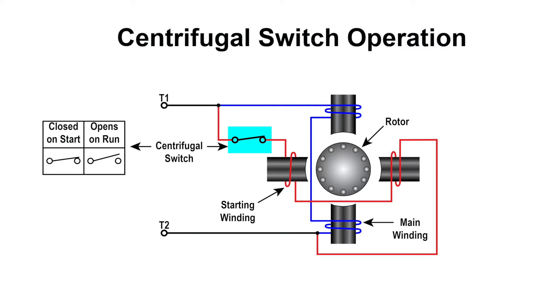In the example provided, when the motor approaches its normal operating speed, the centrifugal force overcomes the spring force, allowing the contacts to open and disconnect the starting winding from the power source. The motor will then continue running through the run windings.